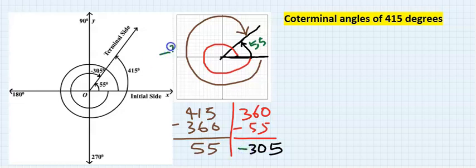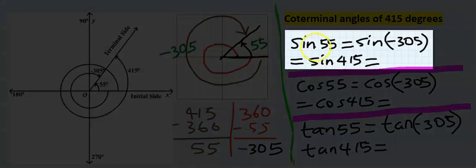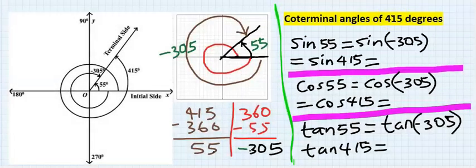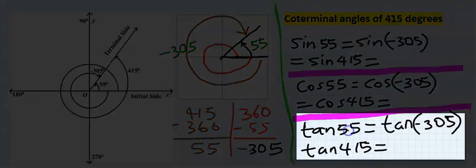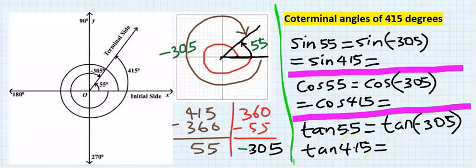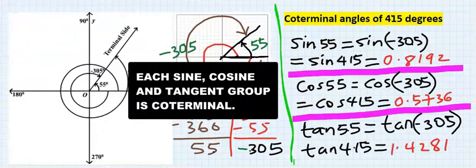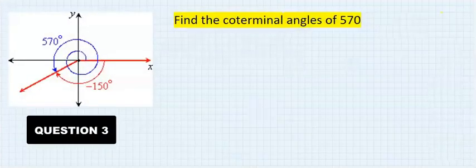Because you went the other way round, you give it a negative. This negative shows you went against the convention. Is sin 55 the same as sin minus 305, and the same as sin 415? Same with cos 55, cos 305, and cos 415. If all give the same answers, they are coterminal. Try this out on your own.